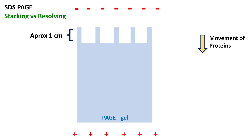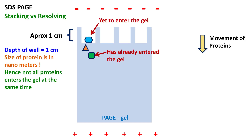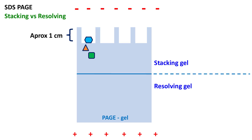Because the size of the well is around 1 cm, not all proteins enter the gel at the same time. As a result, the proteins will not be resolved and their identification after electrophoresis becomes difficult. To solve this problem, we have a stacking gel and a resolving gel.